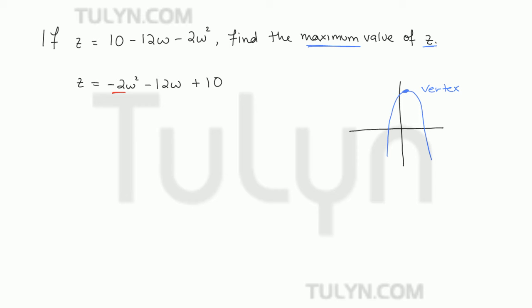But let's start with finding the w-coordinate of the vertex. So the w-coordinate of the vertex is equal to negative b over 2a for the general quadratic formula ax squared plus bx plus c.